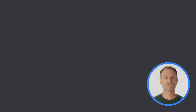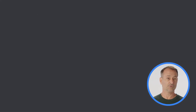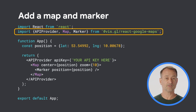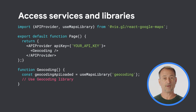You can install it just like any other package from NPM. In your code, import the API provider and any other components you'll want, such as the map component. Access services and libraries in the Maps JavaScript API by importing the Use Maps Library hook.